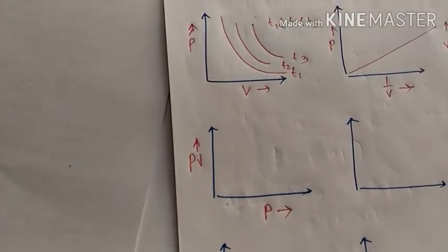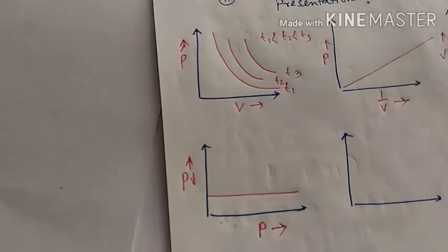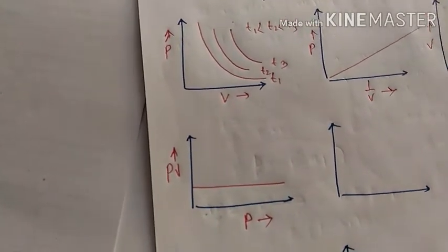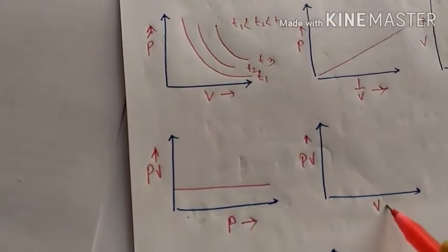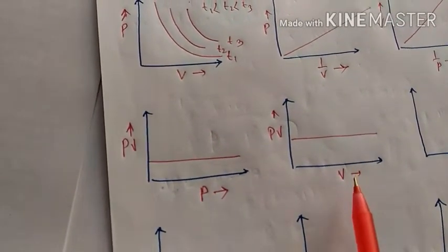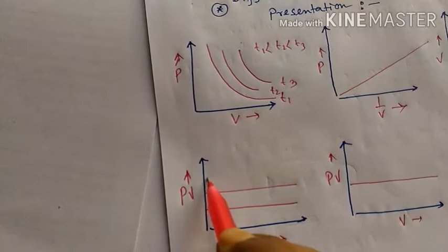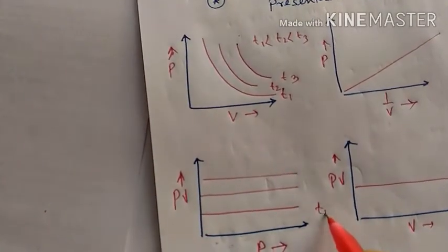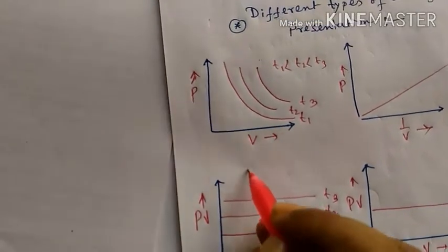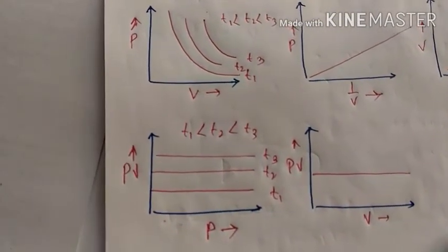Next we are moving to PV versus P and PV versus V graphs. Both of these show lines parallel to the x-axis. If the temperature rises to T1, T2, and T3, the parallel lines shift upward, where T1 is less than T2 is less than T3.